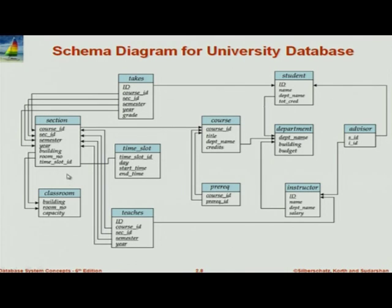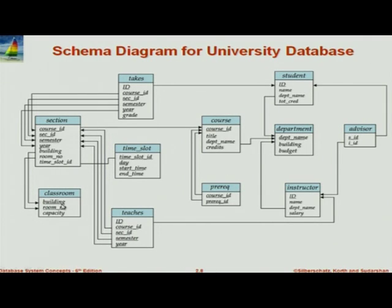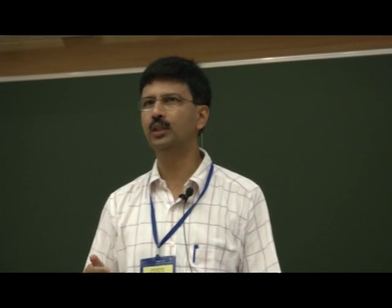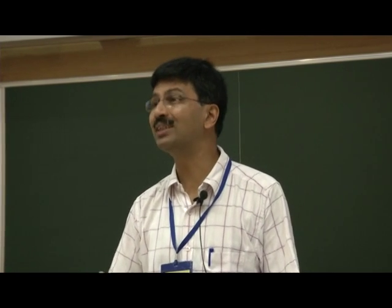We have a classroom which says that this section runs in this building and in this room number. That itself is a foreign key into the classroom relation, which also has a capacity. If you want to schedule classes, you want to make sure that the room is big enough. And then we have a relationship 'teachers' between section and instructor. It says that this particular instructor, identified by ID, teaches this section identified by course ID, section ID, and semester. Those five fields together form the primary key of teachers, which allows an instructor to teach multiple sections of the same course in the same year and semester.